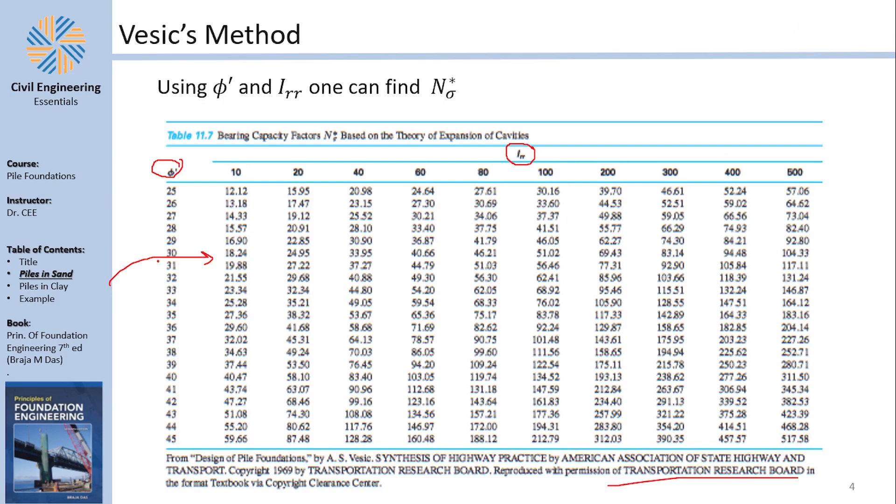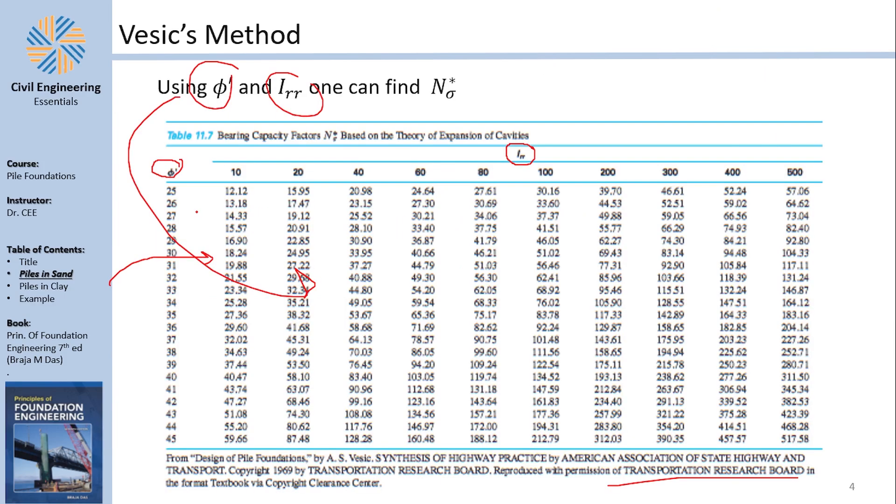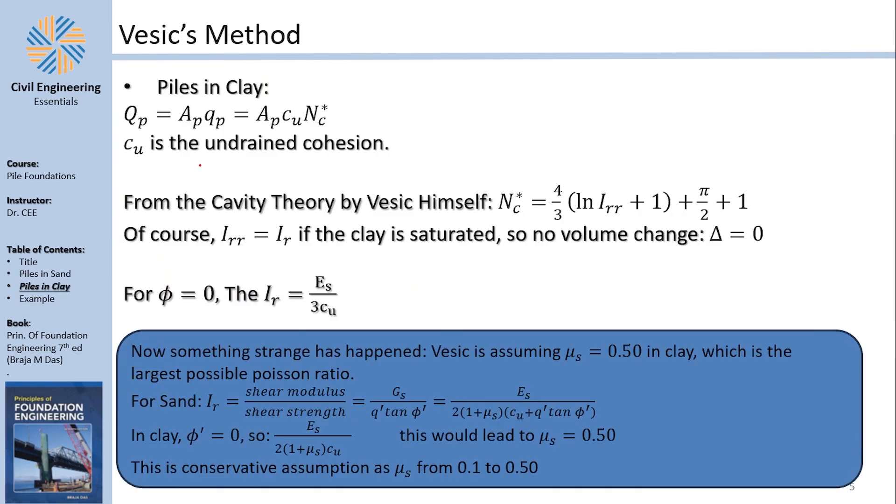Now, going on with this, once you have Irr and ϕ, you can just go into the table and get your Nσ, which means that you can solve and find Qp. Fantastic. So this is Vesic's method, and it also is applied in clay. So let's talk about Vesic's method in clay.